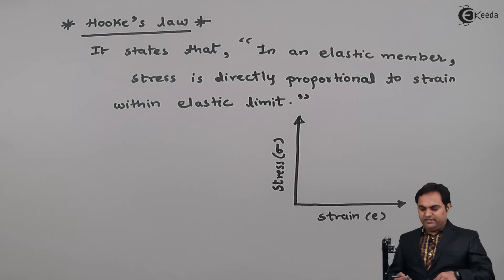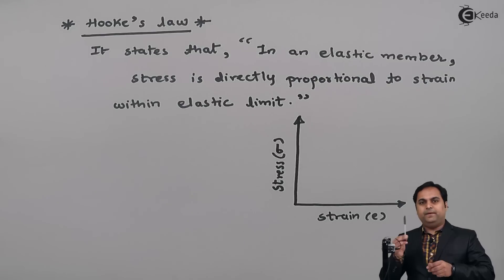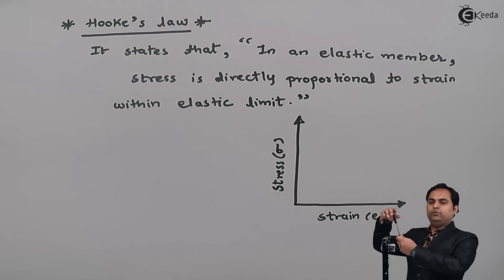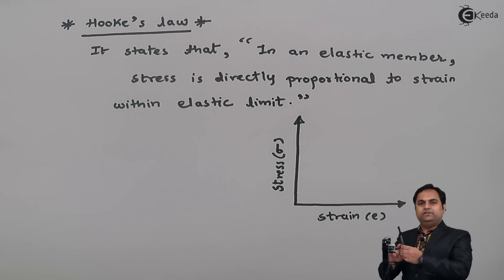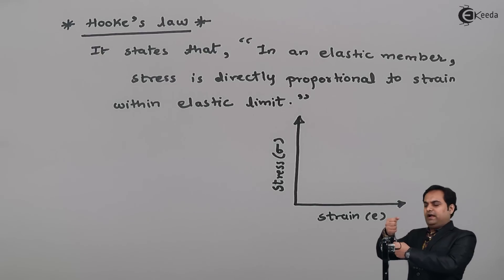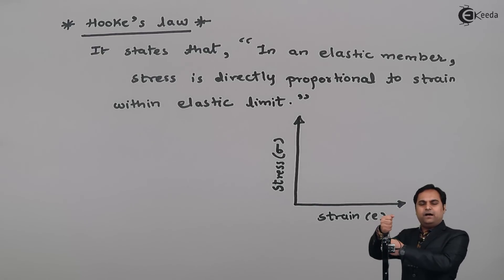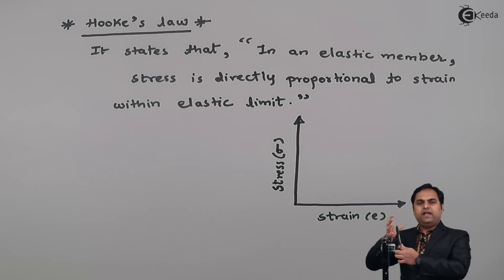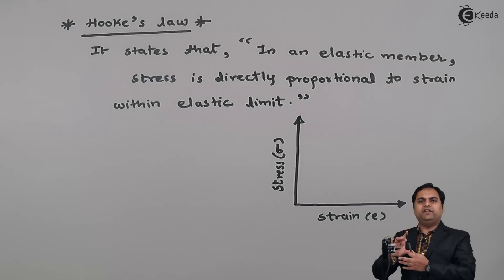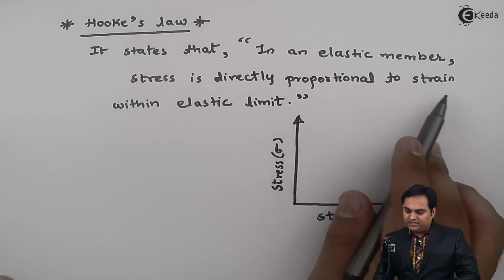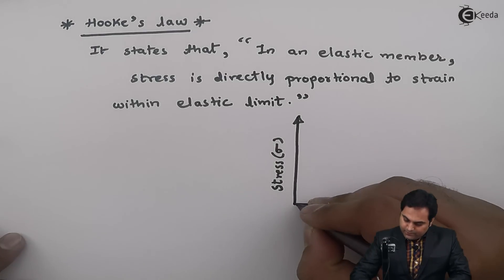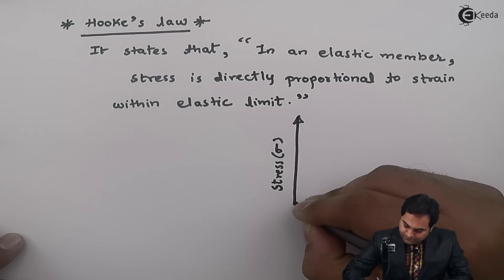The elastic limit means that if we have a member — a rod — and I am pulling this rod, when the material is elastic, the shape of the rod will change when the load is applied, but when the load is removed it will regain its original shape. So in an elastic member, stress is directly proportional to strain within the elastic limit.